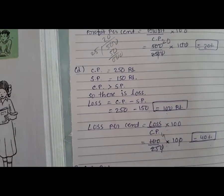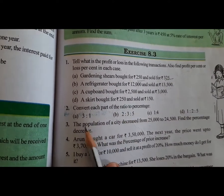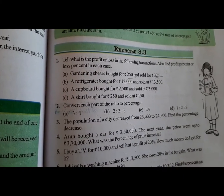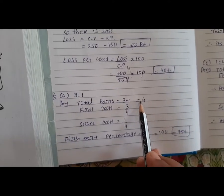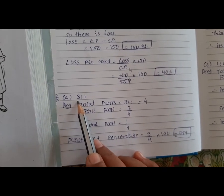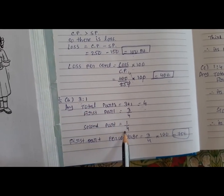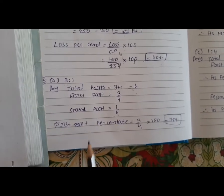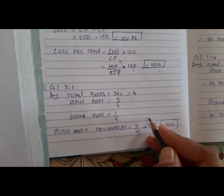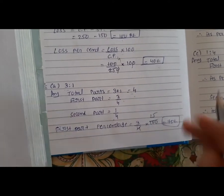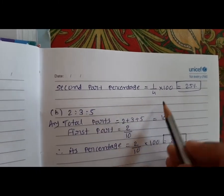Question 2: Convert each part of the ratio to percentage. For ratio 3:1, total parts = 3 + 1 = 4. First part = 3 upon 4, second part = 1 upon 4. First part percentage = 3 upon 4 multiply 100 = 75%.